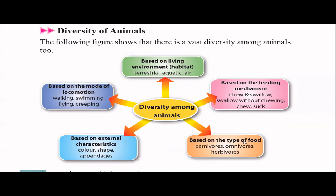Based on the type of food, we have three categories. Carnivores are animals that eat only meat, like tigers, cheetahs, and lions. Omnivores eat both plants and meat — like us humans and mice. Herbivores eat only leaves and plant matter, like deer and rabbits.